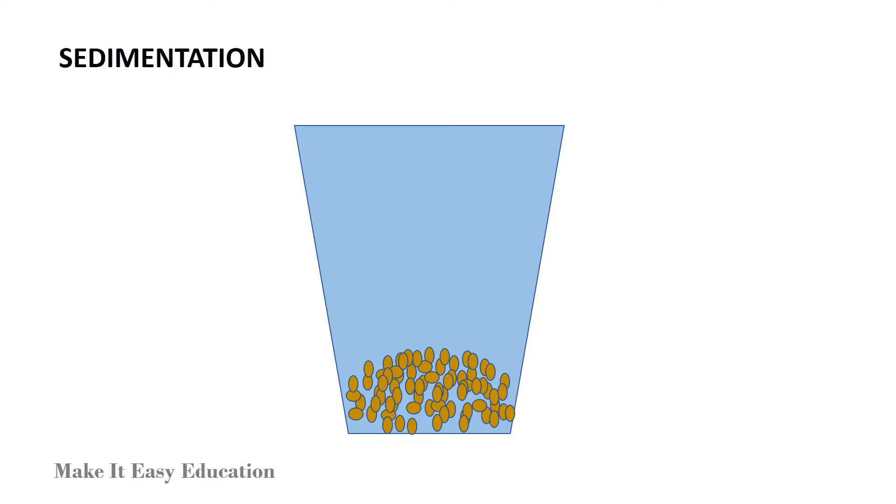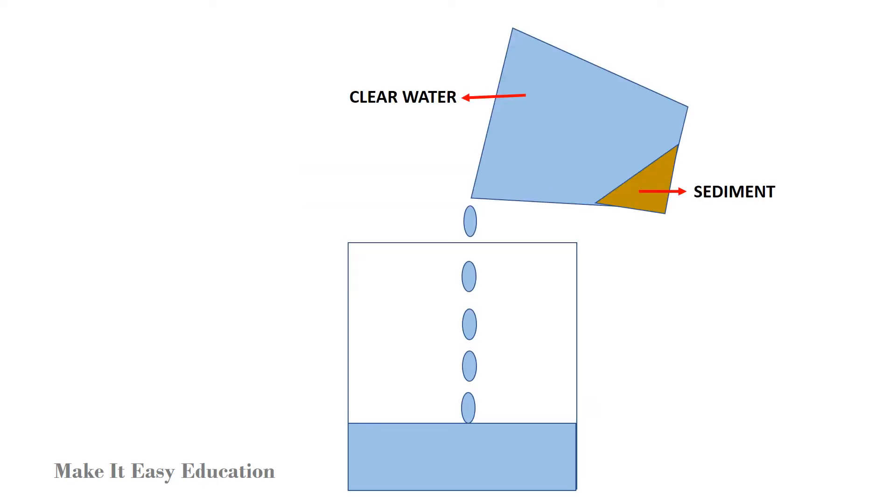All impurities settle at the bottom of the container, called sediment. Clean water is seen at the top of the sediment. This clear water is carefully collected in a vessel. It is called decantation.